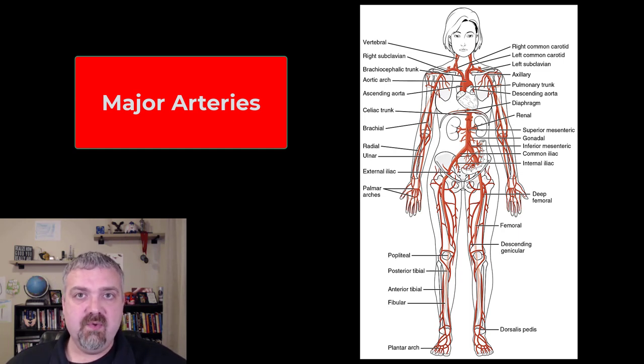So a couple things first. Number one, this is really just a review of surface anatomy terms. If you remember back in the first unit, the surface anatomy terms like your arm is your brachium, your armpit is your axilla. If you remember those terms, you're going to know the names of almost all the blood vessels already.